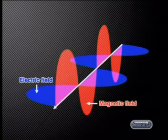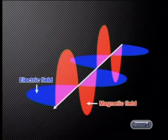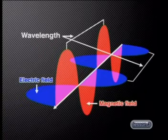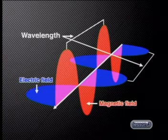This is exactly the principle on which electromagnetic waves work. The wave's changing electric field creates a changing magnetic field, which creates a changing electric field, and this process continues on and on. The distance in space between the peaks of the fields is called the wavelength of the electromagnetic wave. Not all electromagnetic waves have the same wavelength — they occur in a whole range of wavelengths that we call the electromagnetic spectrum.